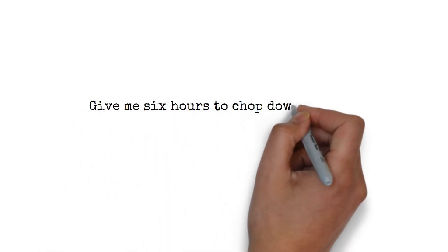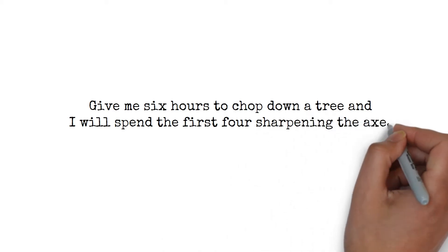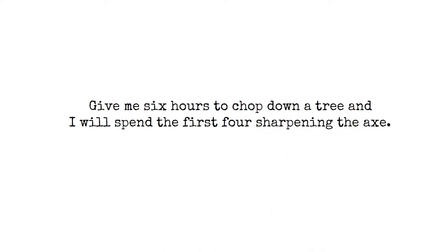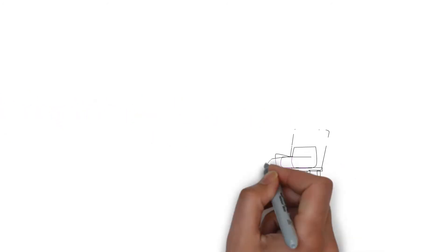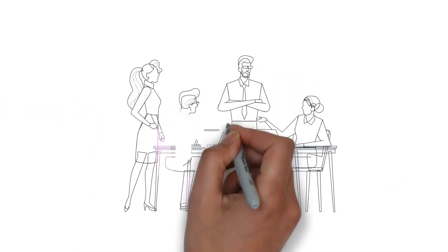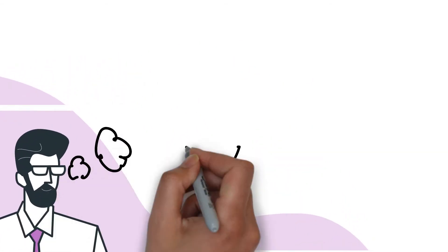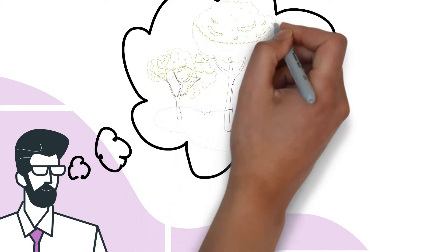Give me six hours to chop down a tree, and I will spend the first four sharpening the axe. Abraham Lincoln. Many first-time managers are anxious to prove themselves the moment they assume the role. They want to roll up their sleeves and immediately hit the ground running. But that is like chopping down a big tree with a dull axe.